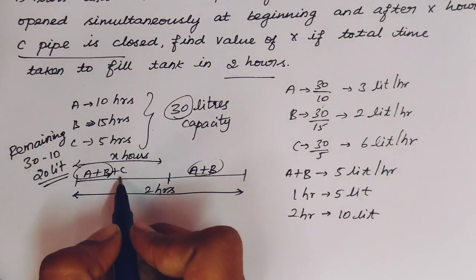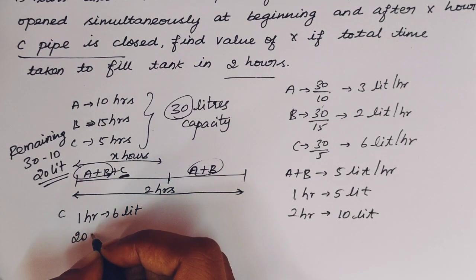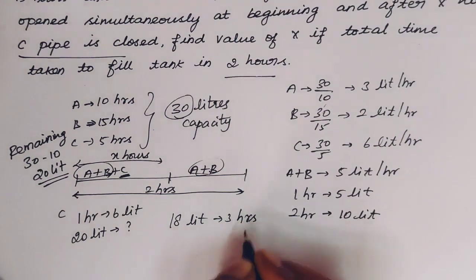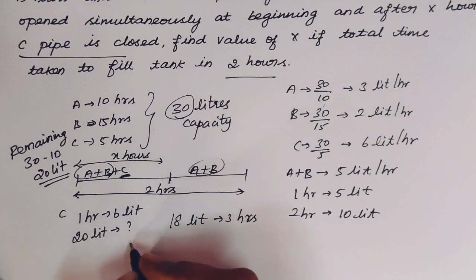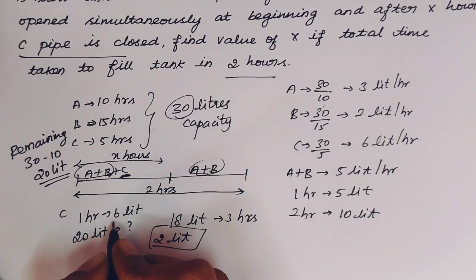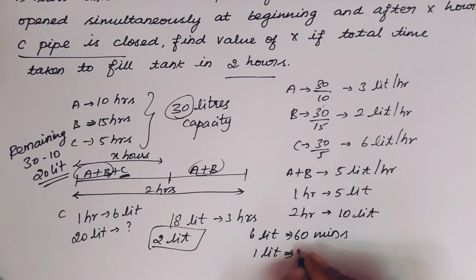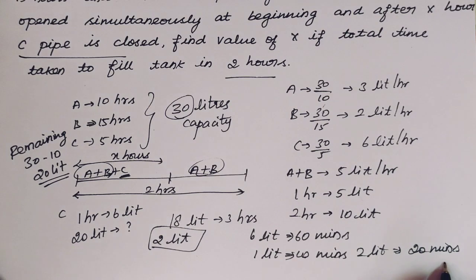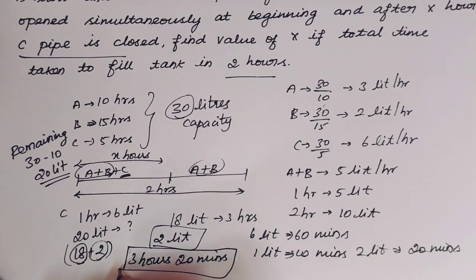C fills 6 liters per hour. For 20 liters: 18 liters takes 3 hours, leaving 2 liters remaining. Since 1 hour is 60 minutes and C fills 6 liters per hour, 1 liter takes 10 minutes, so 2 liters takes 20 minutes. Therefore the answer is 3 hours 20 minutes — that is when C pipe should be closed.